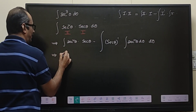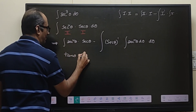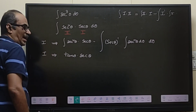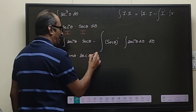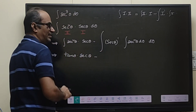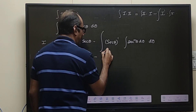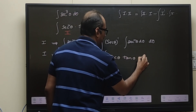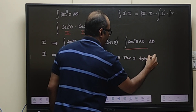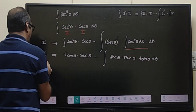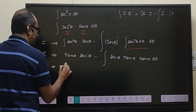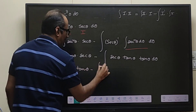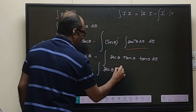This becomes: the integral of secant square theta, which we know is tan theta, multiplied with secant theta. Let us call what we need to find as i. So i equals tan theta into secant theta, minus the integral of secant theta tan square theta, d theta. The derivative of secant theta is secant theta tan theta.